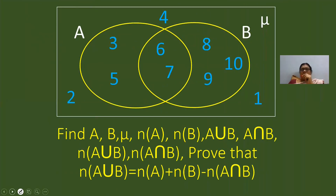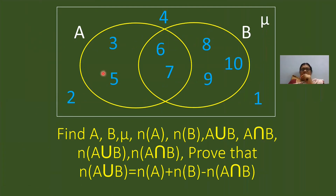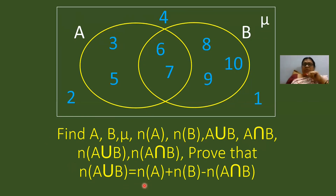This next problem is very important — it is a compulsory question and you may get this question for 4 marks in the final examination. A Venn diagram will be given and you have to find set A, set B, mu, N of A, N of B, A union B, A intersection B, N of A union B, N of A intersection B, and you have to prove that N of A union B equals N of A plus N of B minus N of A intersection B.